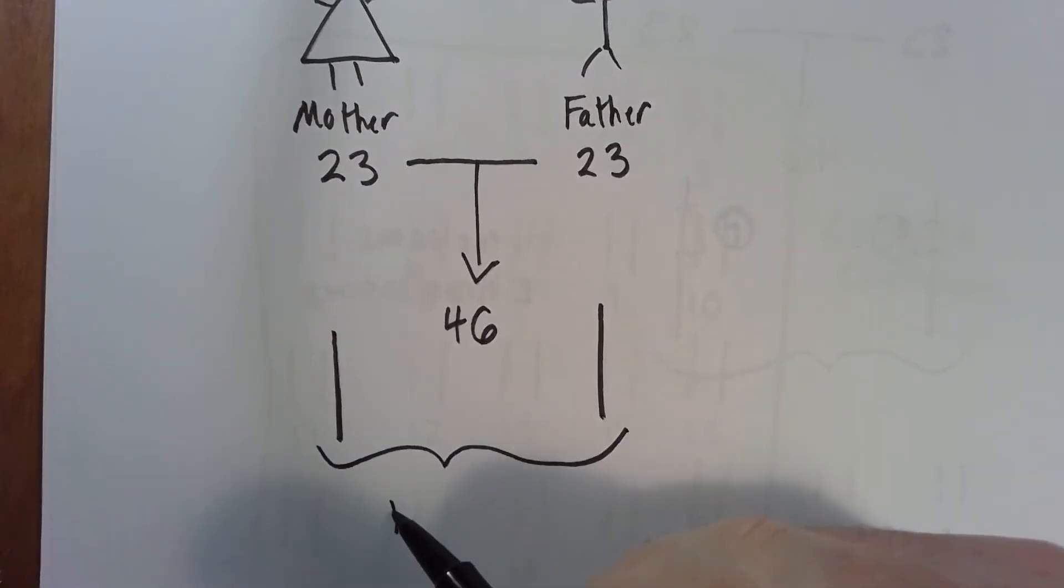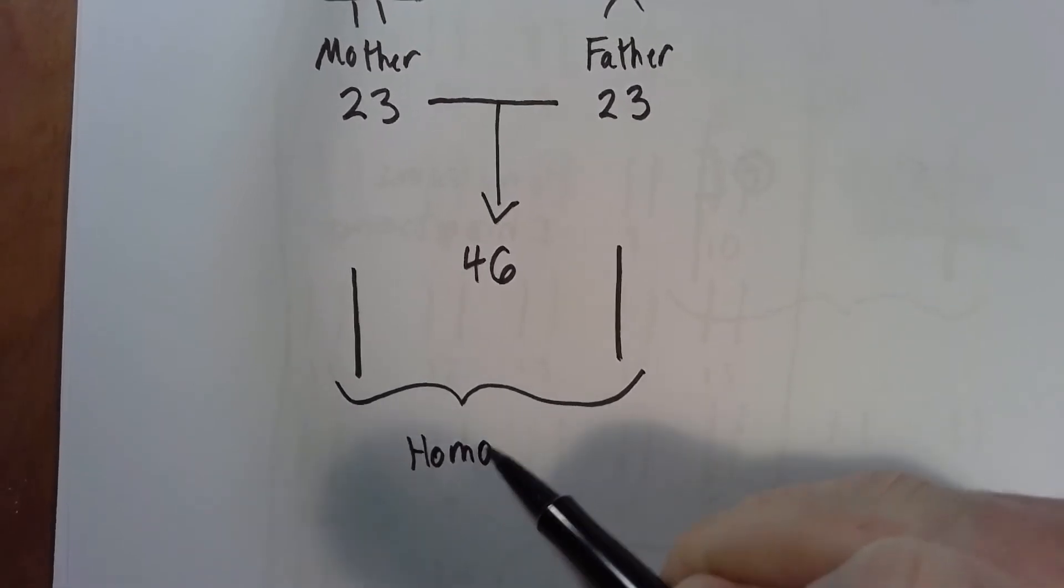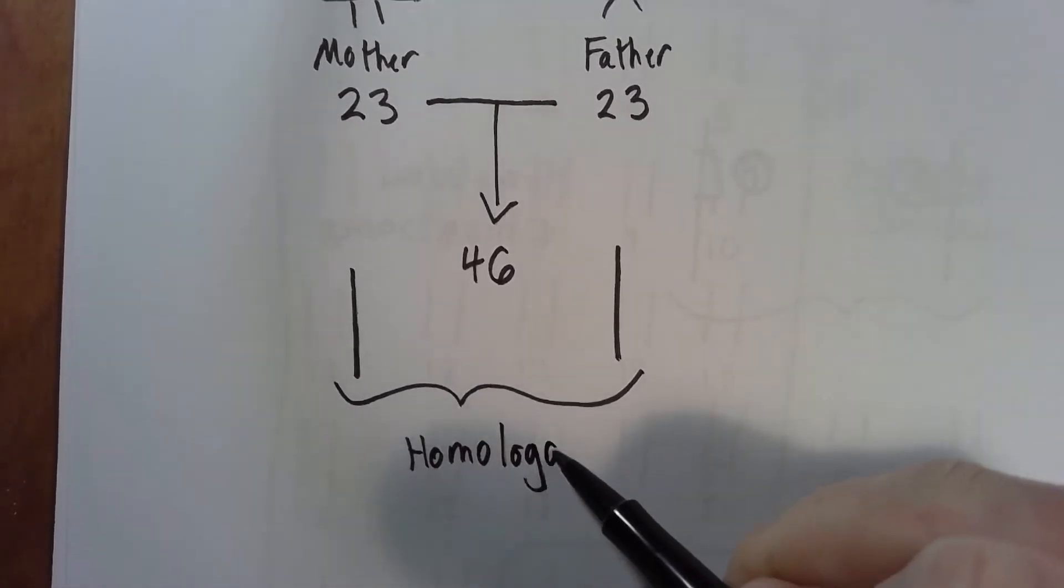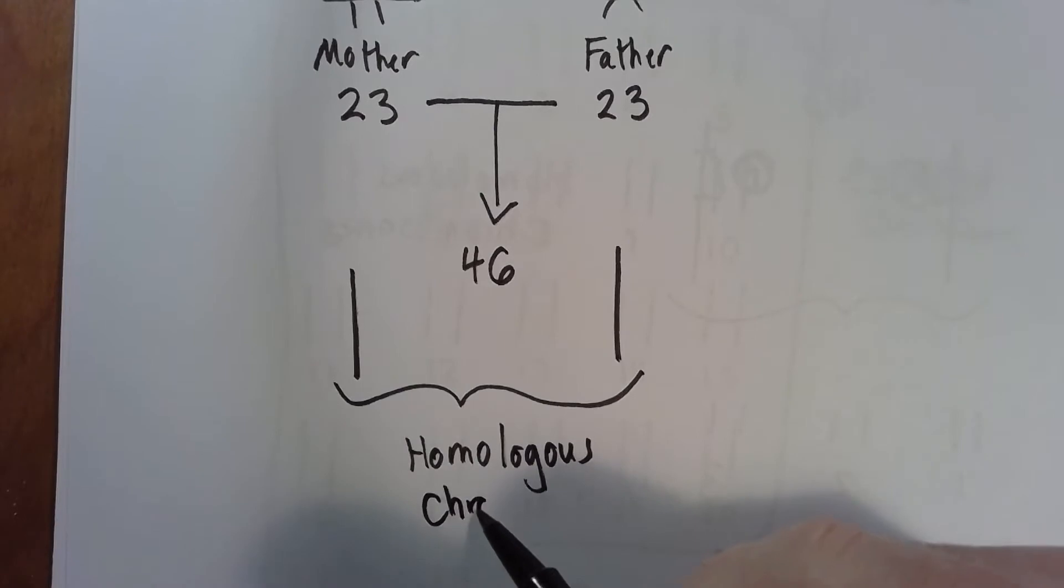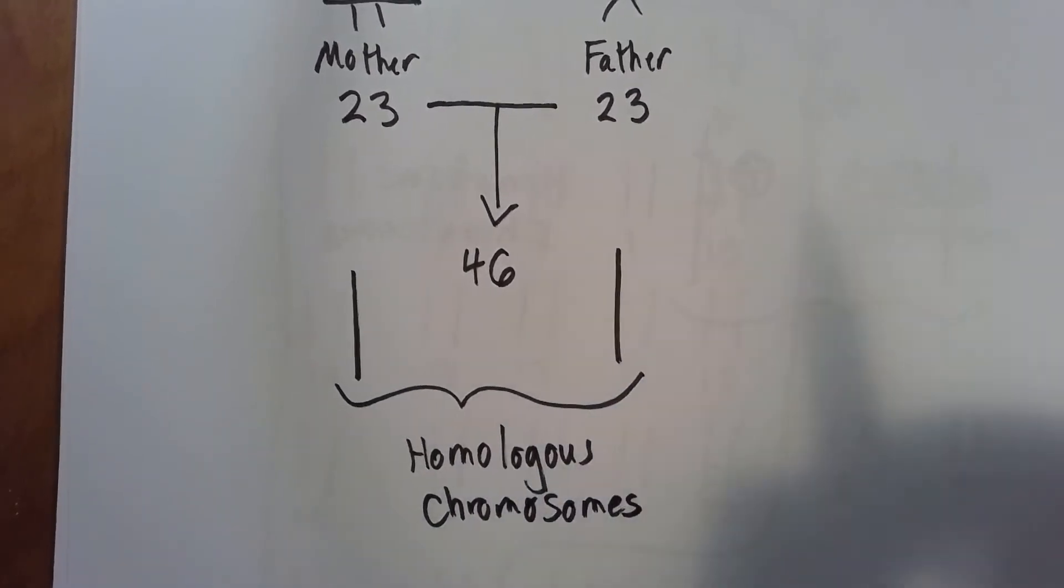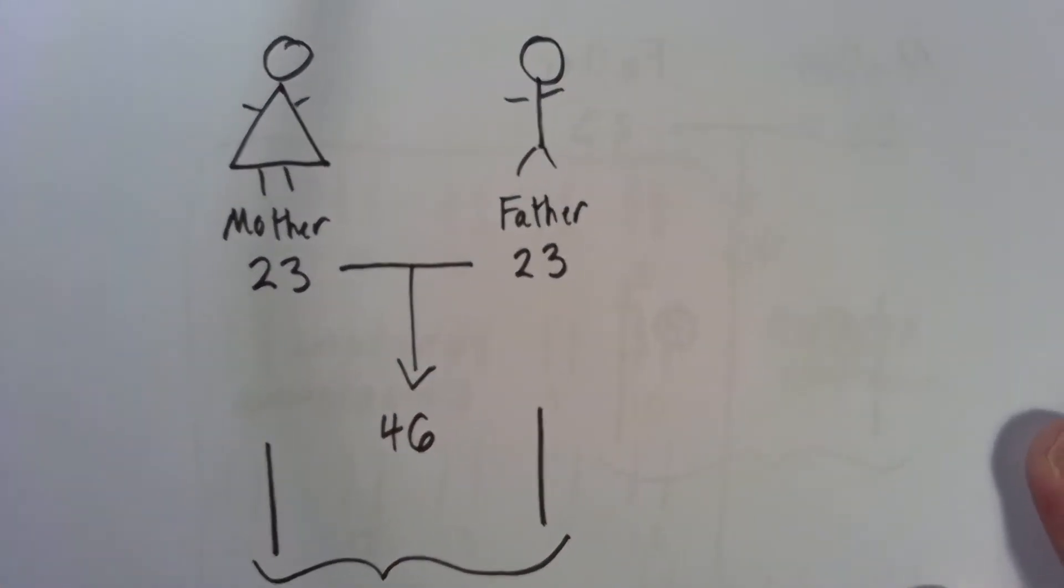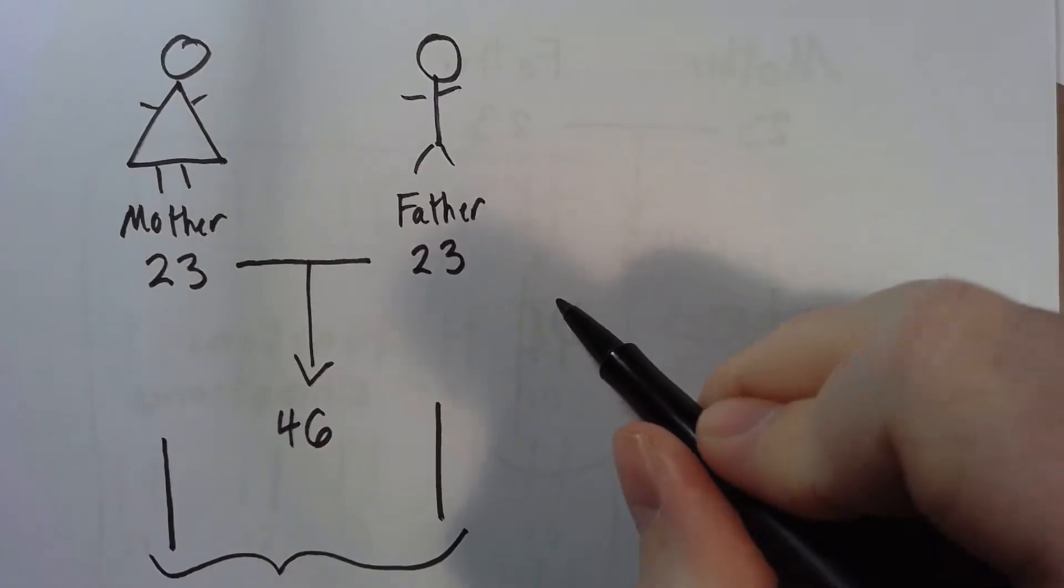We call these homologous chromosomes. You also hear them called homologous pairs. You have 23 pairs of chromosomes, so if you were to write that out...